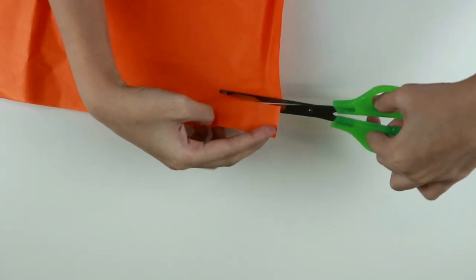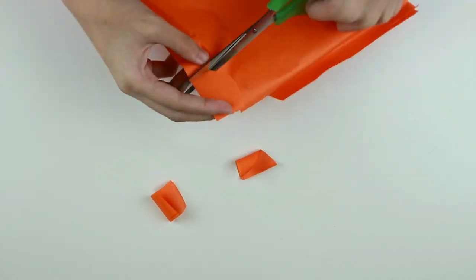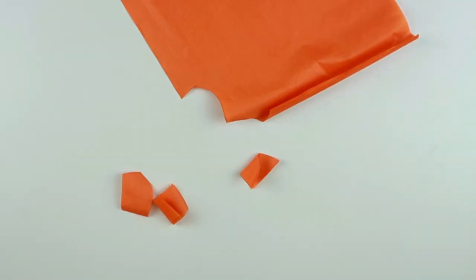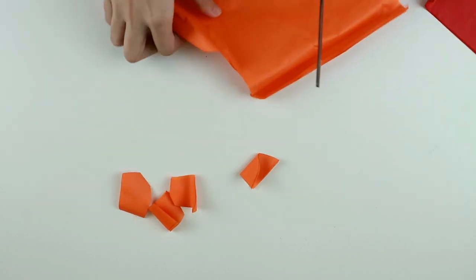Now, take the Japanese tissue paper and start cutting irregular shapes. You can cut it in any way you want just as long as they will resemble fire when stuck together.